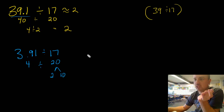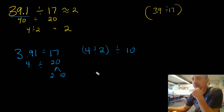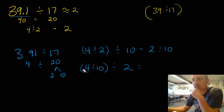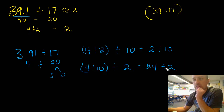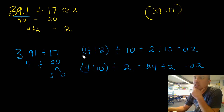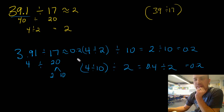It's up to us which way we split it. We can do 4 ÷ 2 = 2, then 2 ÷ 10 = 2 tenths. Or we can do 4 ÷ 10 = 4 tenths, then 4 tenths ÷ 2 = 2 tenths. Either way, we get the same estimated quotient. So for 3 and 91 hundredths divided by 17, our estimated quotient is about 2 tenths.